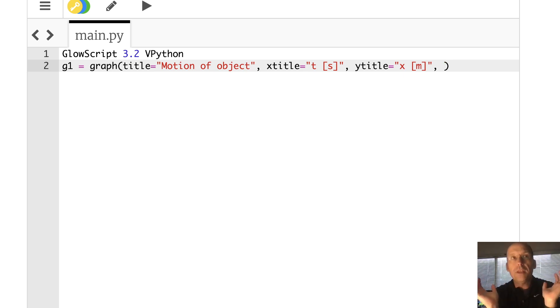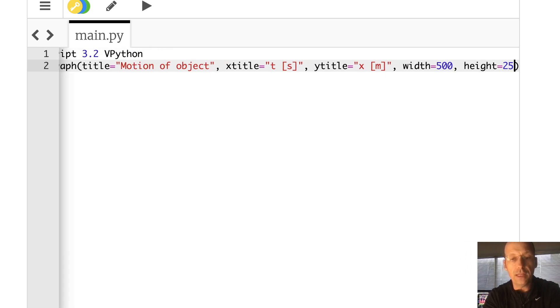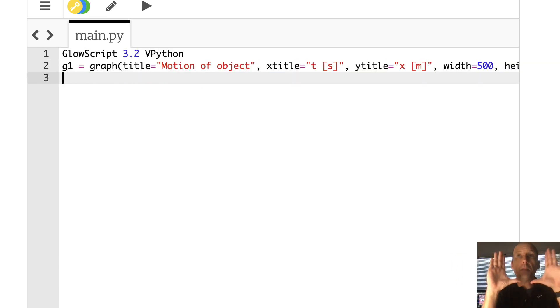So if you don't, the image is a lot of times too big, so I like to put width equals 500, height equals 250. That should be good. Now, that just makes the boundary for the graph. To make the graph, I need a function called a g-curve. And I'm going to call it f1 equals g-curve, color equals color dot blue.